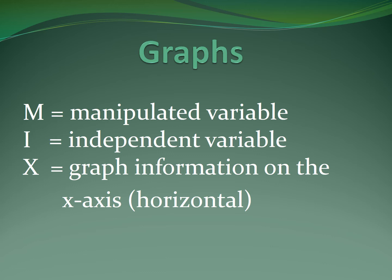On the other hand, M is the manipulated variable because you can change it. I is an independent variable because it can stand alone and it is graphed on the x-axis which is the horizontal.